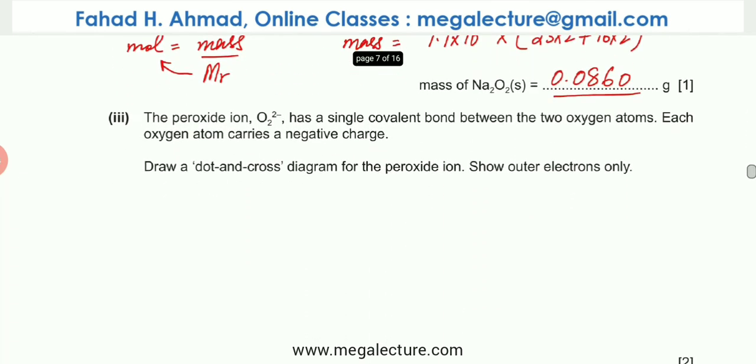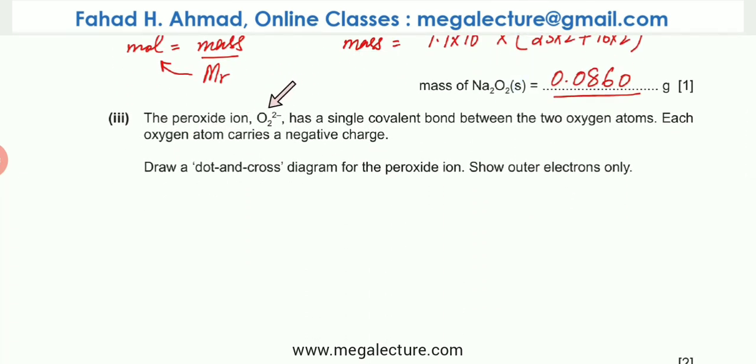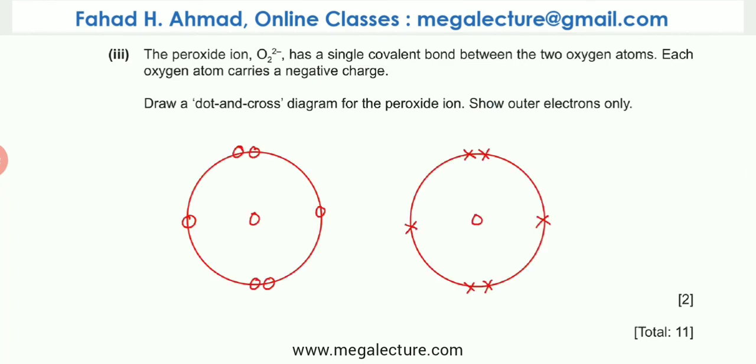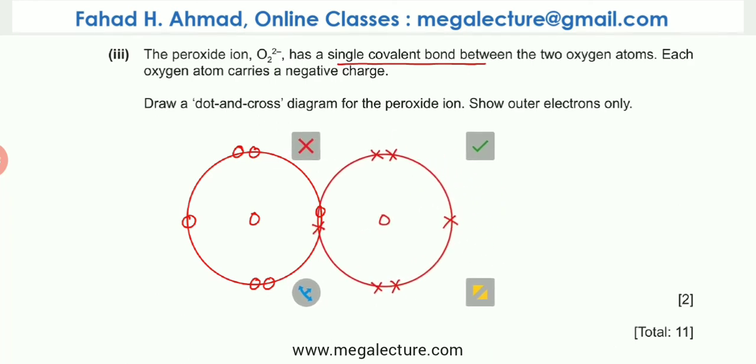Part 3 of the question states that the peroxide ion has a single covalent bond between the two oxygen atoms. Each atom carries a negative charge. Draw a dot-and-cross diagram for the peroxide ion showing outer electrons only. We're going to draw this O2²⁻ ion. Here I've drawn the two oxygen atoms. Both oxygen atoms have 6 electrons. The first thing they stated was that they're forming a single covalent bond. Let's make a single covalent bond by sharing 1 electron each, and that's your single covalent bond.